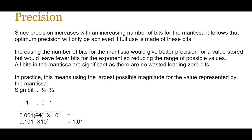Now this can lead to another problem. If you increase the number of bits for the mantissa, that gives you better precision for a value, but that leaves fewer bits for the exponent, so that reduces the range of possible values. Now in an exam, this is very important to remember: accuracy or precision increases if you allocate more bits for the mantissa, and the range increases if you allocate more bits for the exponent. So if you increase the accuracy or precision of a number, the range will decrease. If you increase the range by allocating more bits to the exponent, then the precision or accuracy is reduced.